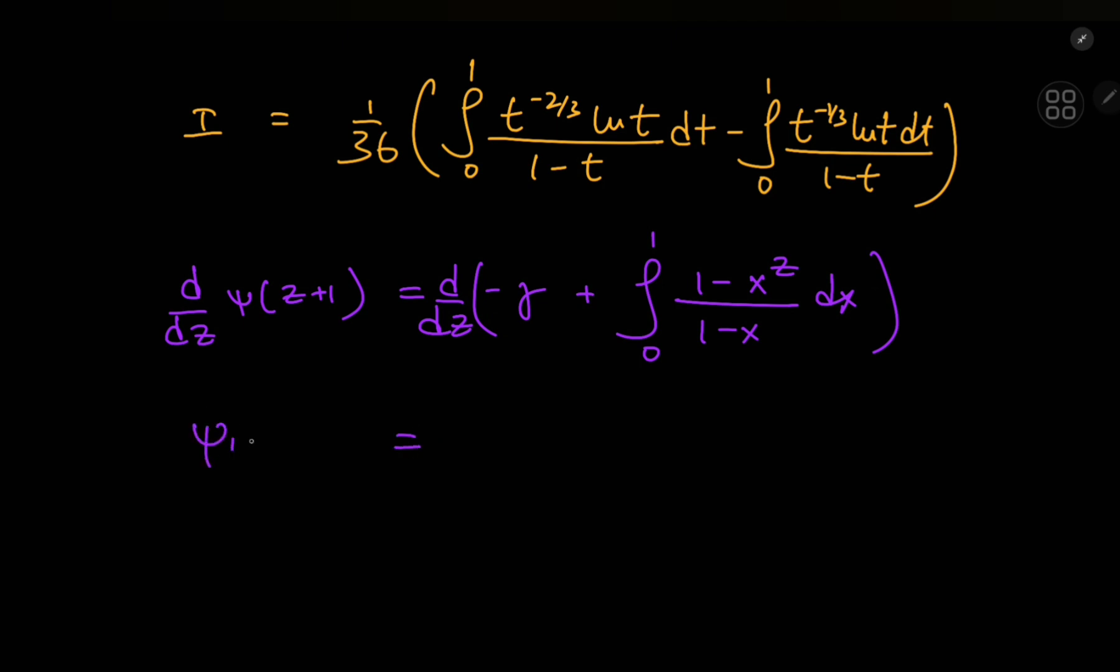the digamma function turns into the trigamma function that's psi sub 1 of z plus 1. And here we're left with the integral from 0 to 1. Negative sign x to the z times log x divided by 1 minus x dx.